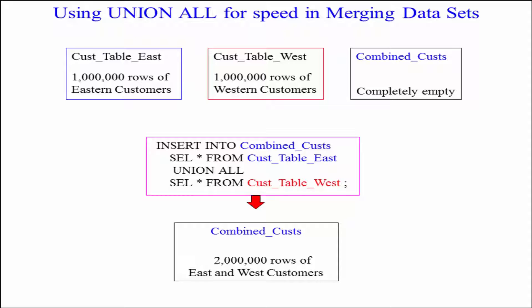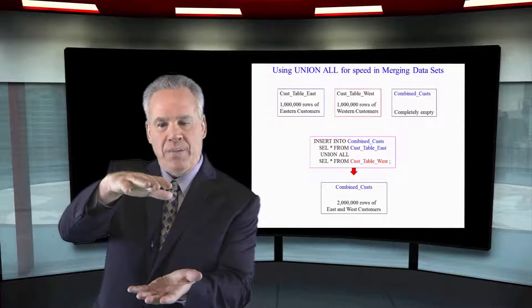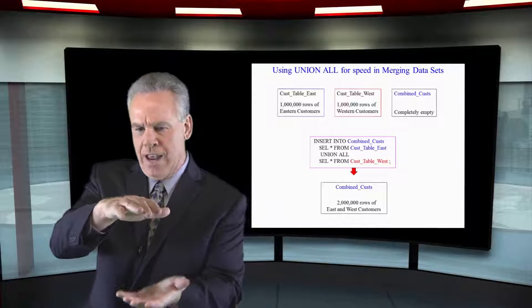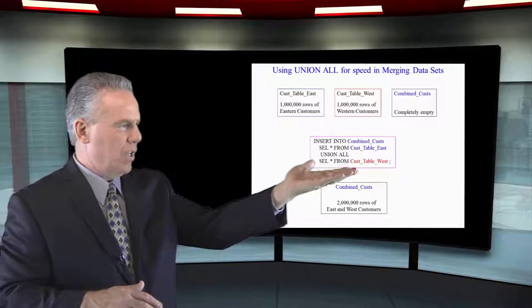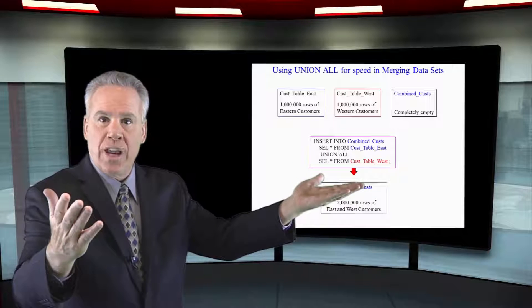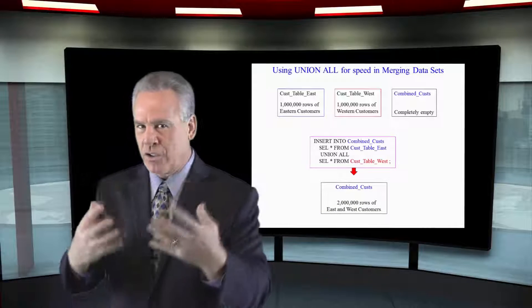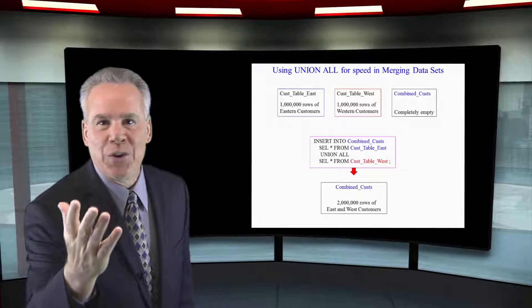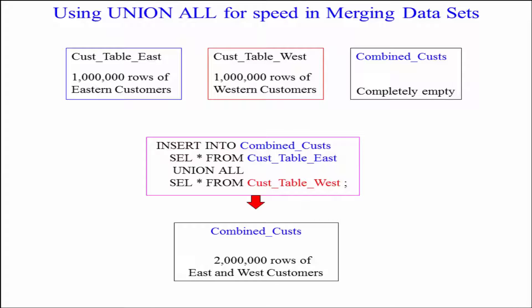If I said I can do that — I'll create combined_custs, it starts empty — and then I insert into combined_custs by selecting everything from cust_table_east, there are no pictures taken. But when I then say let's insert cust_table_west, they take a huge number of pictures because the table wasn't empty anymore.